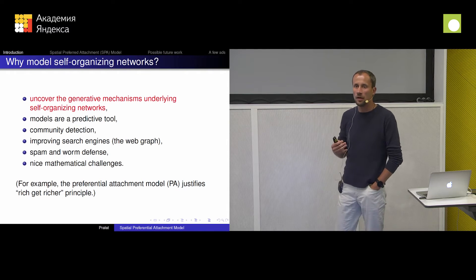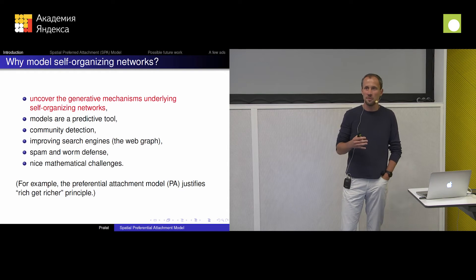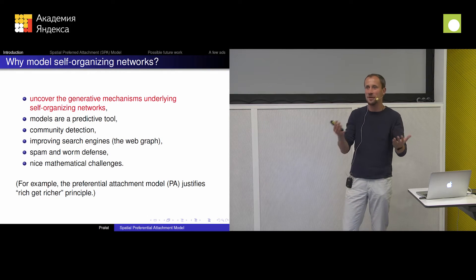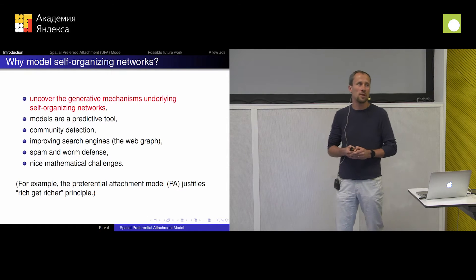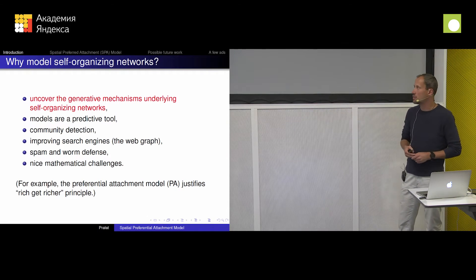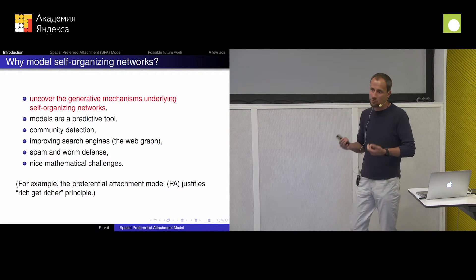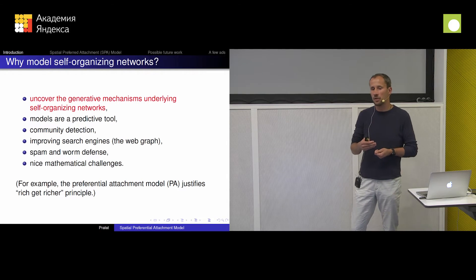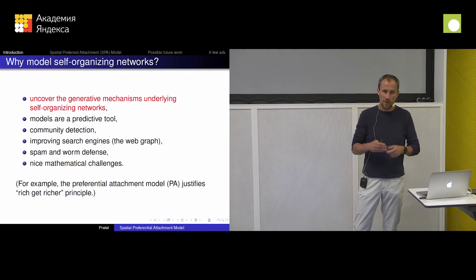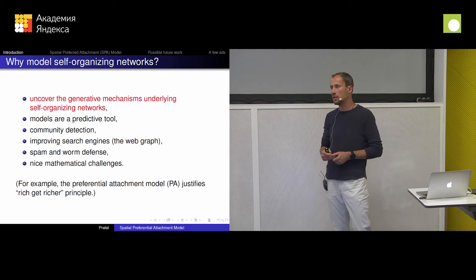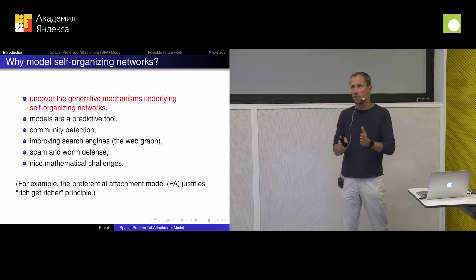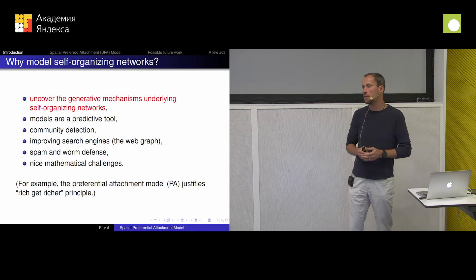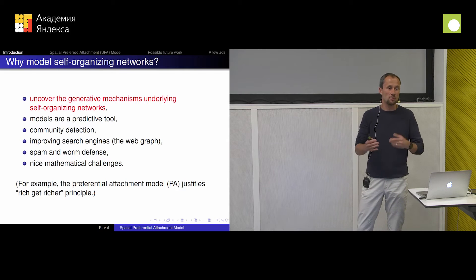Nobody claims that this is the model that produces the web graph — no one says that you can compare these two and they look the same. But what we learn at the end of this process is that in these networks we have the so-called rich-get-richer principle. That's why you have power law degree distribution: if you gain a lot of neighbors, then the probability that someone new connects to you is proportional to the power you already accumulated. So if you're a little bit ahead of the competition, you gain a bigger chunk of the cake. Many, many models have this rich-get-richer principle incorporated.